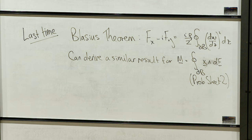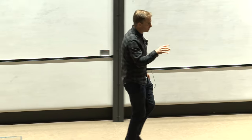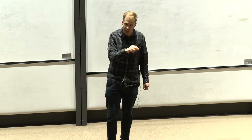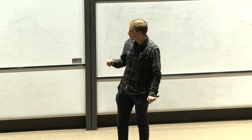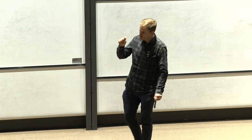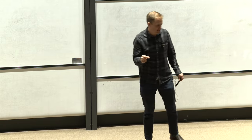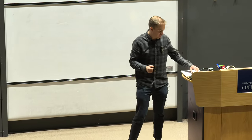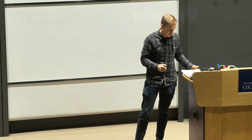On the second problem sheet you'll see that you can derive a similar result for the moment. Just a reminder that the moment on a body is a cross product of the position vector and the element of force. So if you're thinking about the moment on a body and integrating around the surface, you need to think carefully about what the incremental bit of force is on each part of the body.